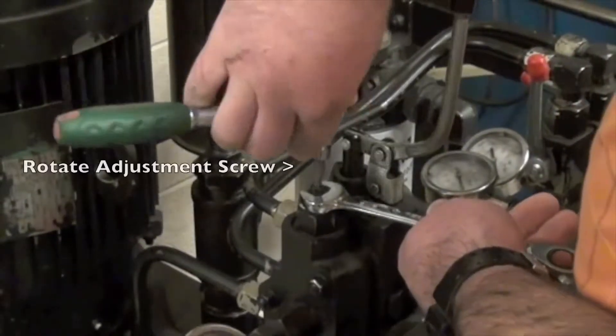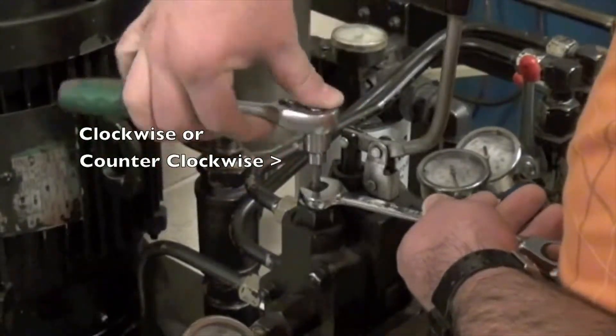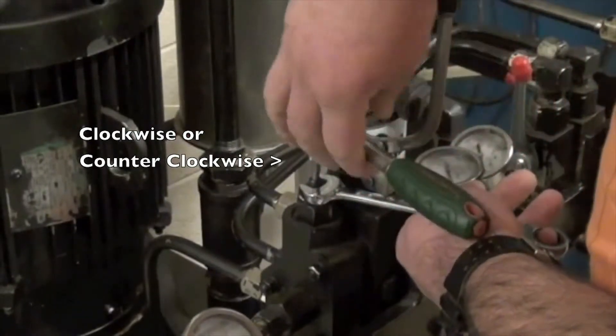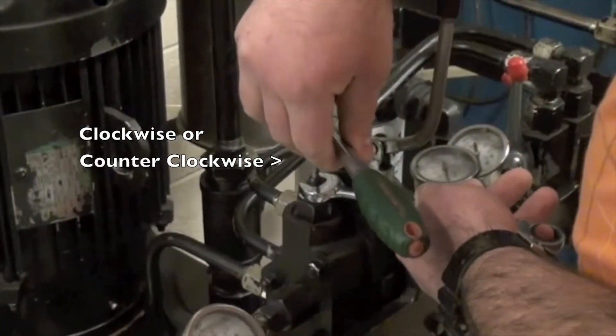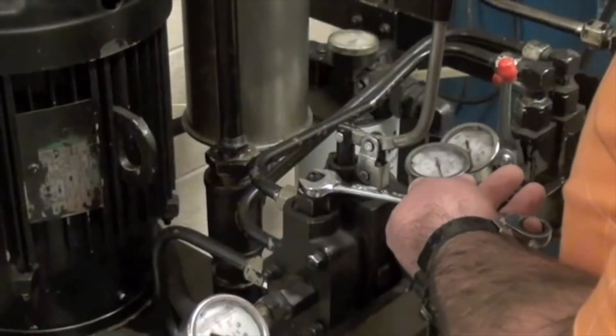Step 3. Rotate the adjustment screw clockwise to increase the relief pressure or counterclockwise to decrease it. As a rule of thumb, a quarter turn can have dramatic effects on the pressure. Sometimes a slight turn is all that's required.